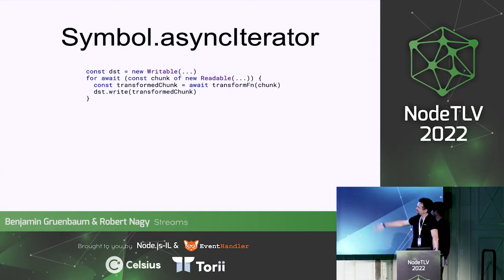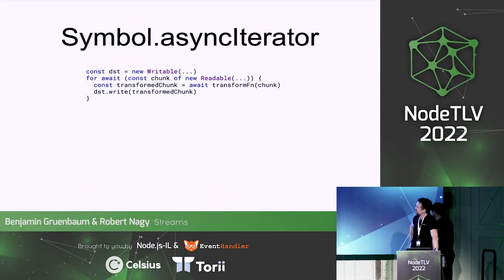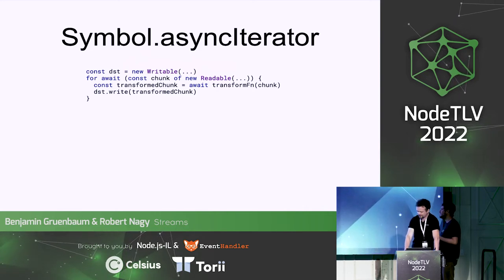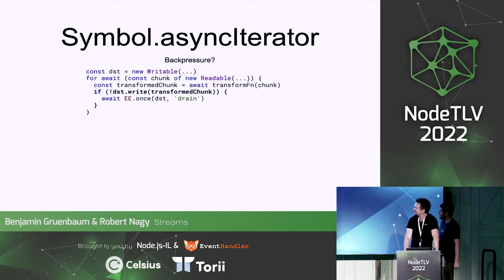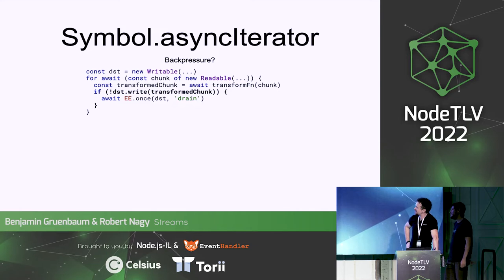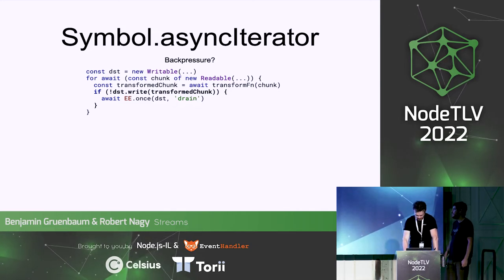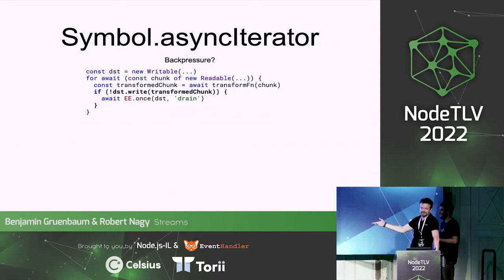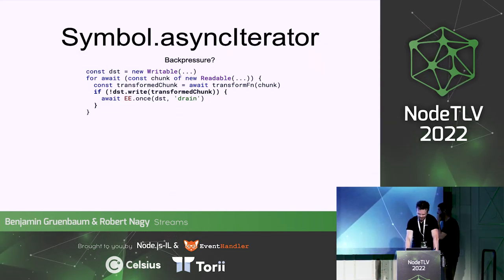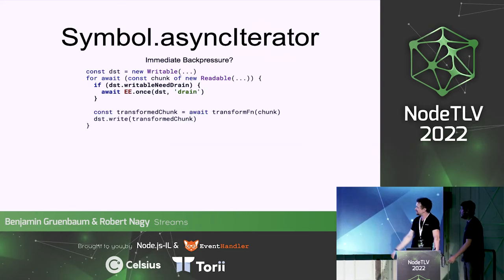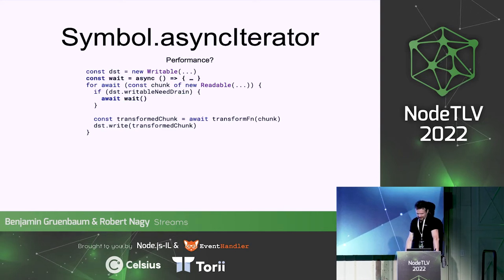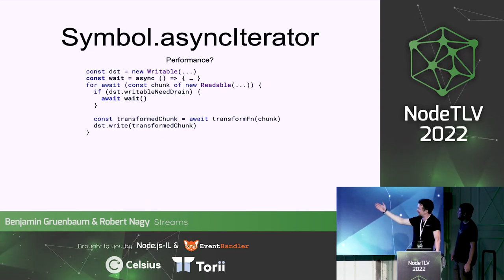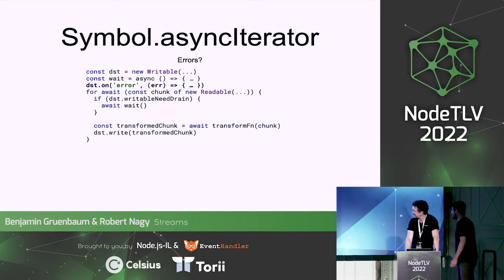Then we got async iterators, which made reading from a stream very easy — you just for-await the stream and iterate over chunks. But then you have to write to the destination without back pressure, so you could fill up memory and crash. We check write and wait for drain, but if you're in a retry loop you're only checking after you've already written. We added writable.needDrain so you could check before writing, but then you need a wait method and error handling on the destination.